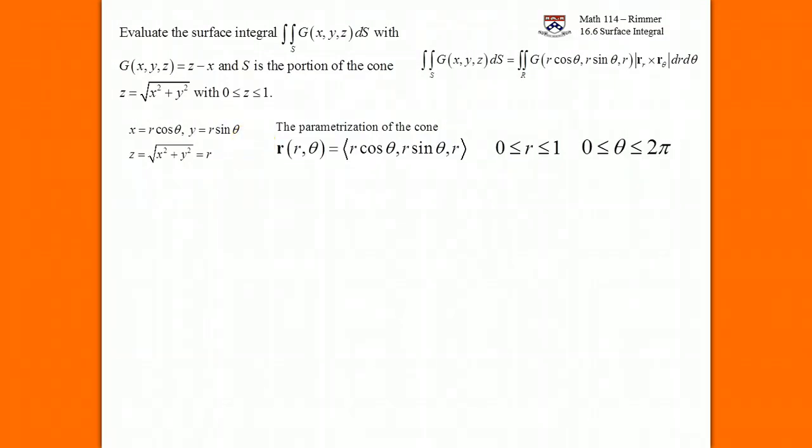Now let's calculate the partial derivatives of r. We need the partial derivative of r with respect to r and the partial derivative of r with respect to theta. r being this bold r is the position vector, the parametrization, and the r that's inside is a variable from polar. r_r would be to take the r derivative of the first component and get cosine theta, the r derivative of the second component and get sine theta, the r derivative of the third component and get one.